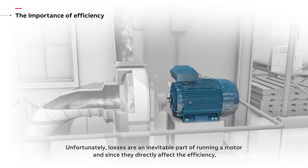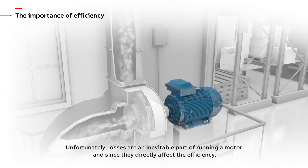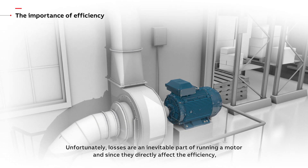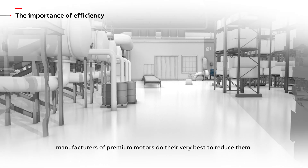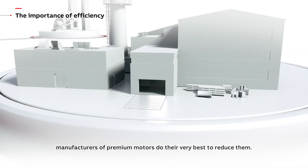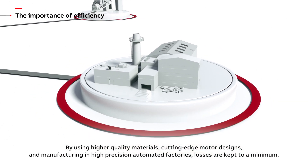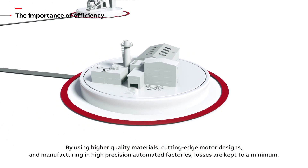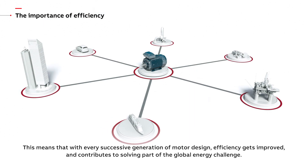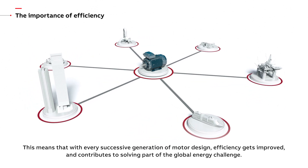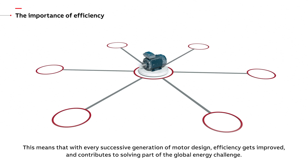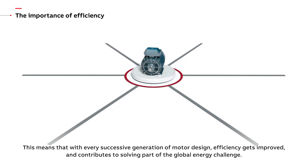Unfortunately, losses are an inevitable part of running a motor, and since they directly affect the efficiency, manufacturers of premium motors do their very best to reduce them. By using higher quality materials, cutting edge motor designs, and manufacturing in higher precision automated factories, losses are kept to a minimum. This means that with every successive generation of motor design, efficiency gets improved and contributes to solving part of the global energy challenge.